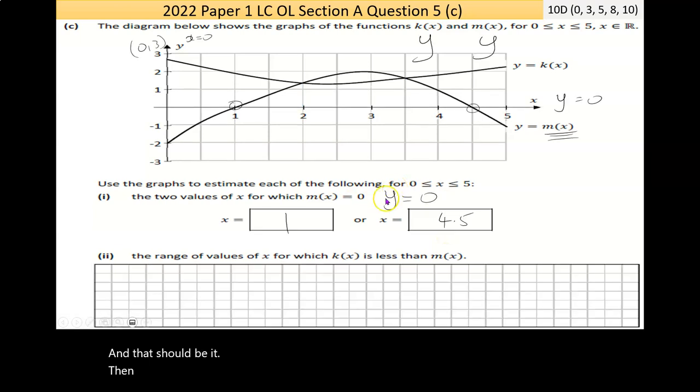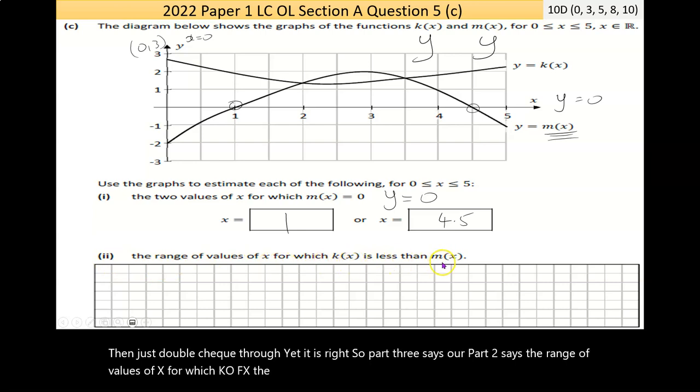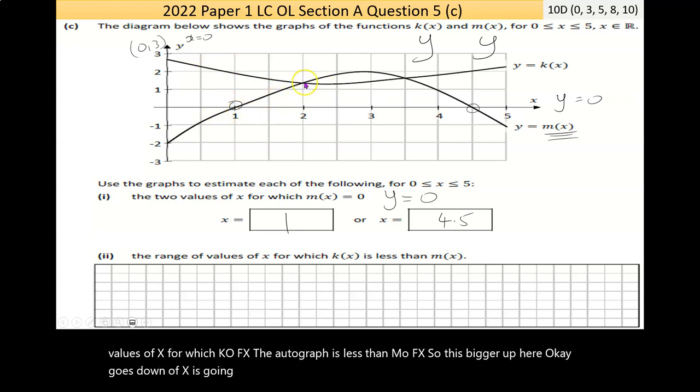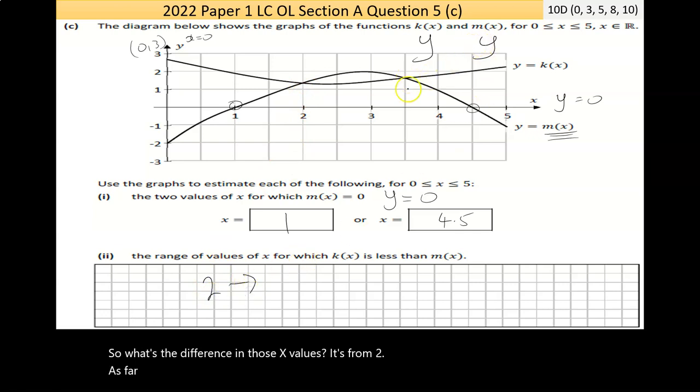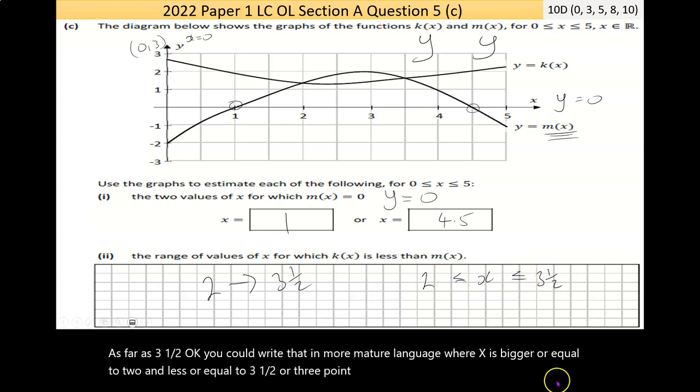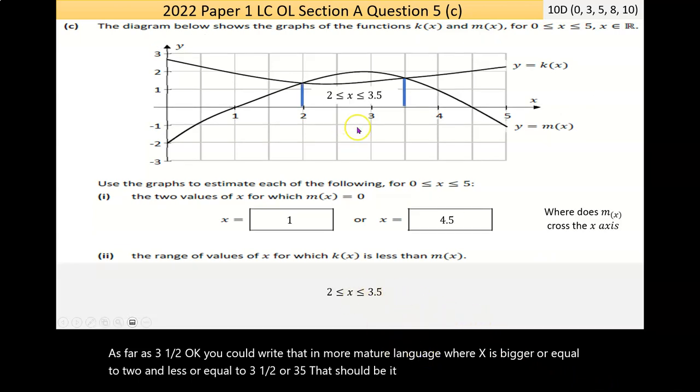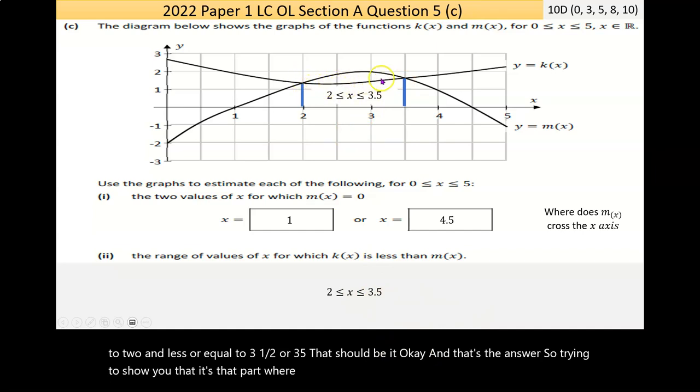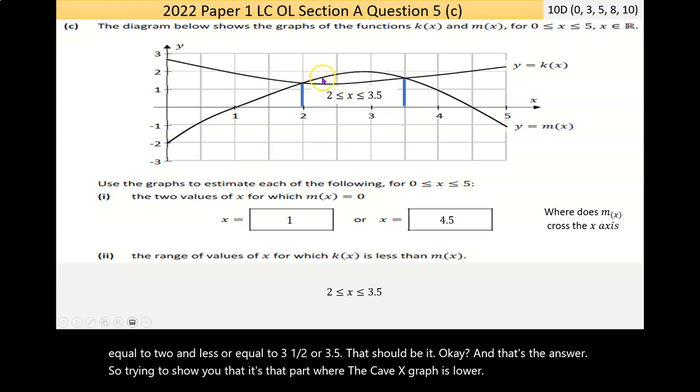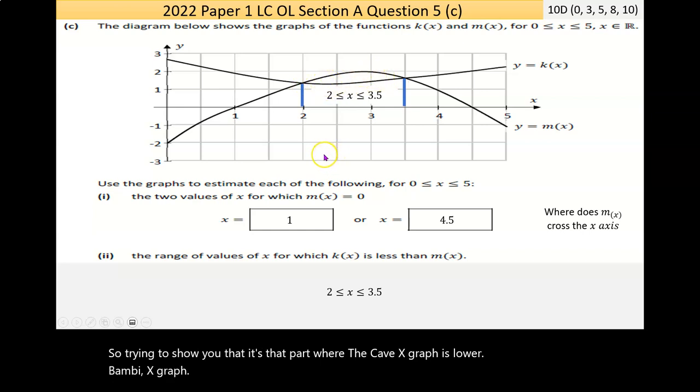Part 2 says the range of values of X for which K of X, the other graph, is less than M of X. So this bigger up here, K, goes down and M of X is going up. So at this stage here, K of X is lower than it. So what's the difference in those X values? It's from 2 as far as 3.5. Now, you could write that in more math-y language where X is bigger than or equal to 2 and less than or equal to 3.5. That should be the end of question 5.